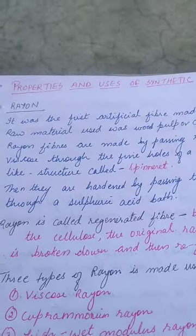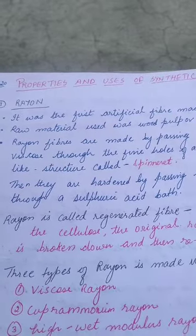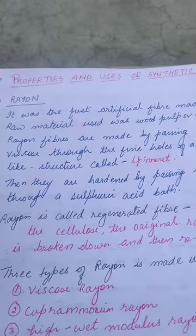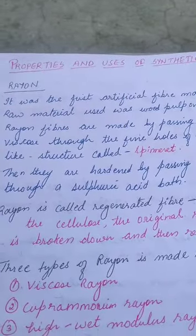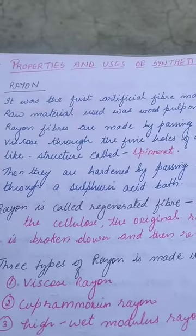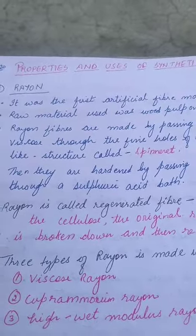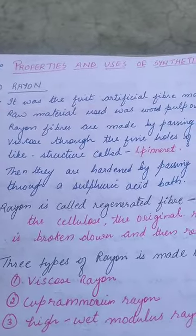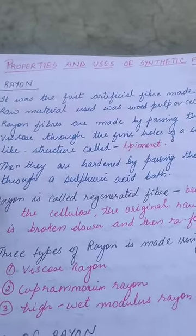Cellulose is extracted, purified, and then treated with chemicals to get a thick, viscous, honey-colored solution called viscose. Rayon is a synthetic, man-made fiber, but it is obtained from cellulose. Cellulose is a natural plant material, but it has to go through all the same processes that other synthetic fibers follow.